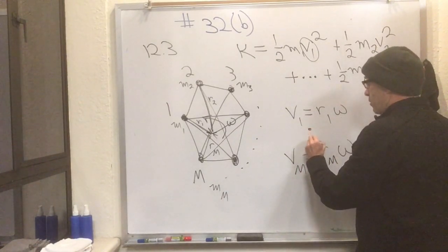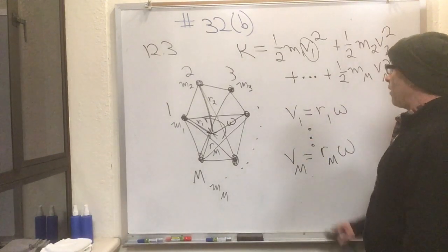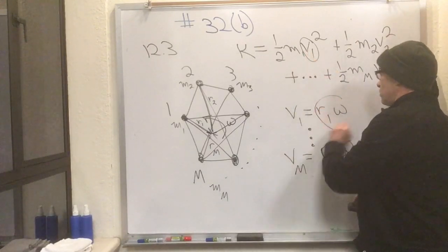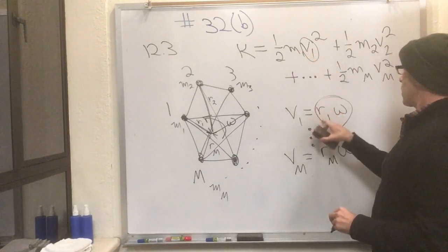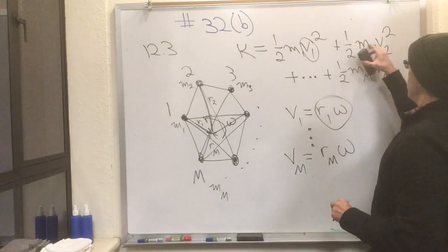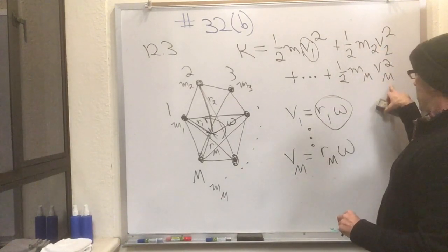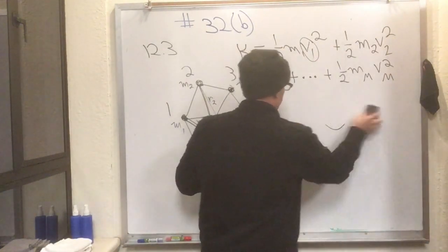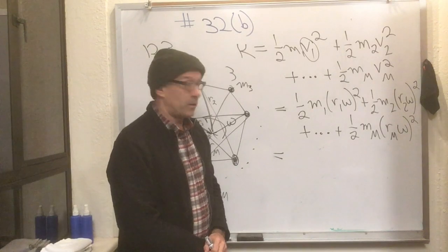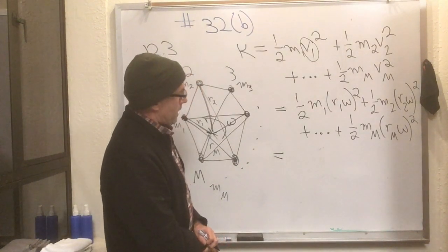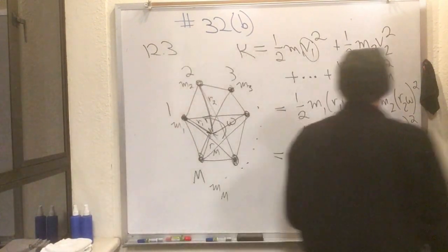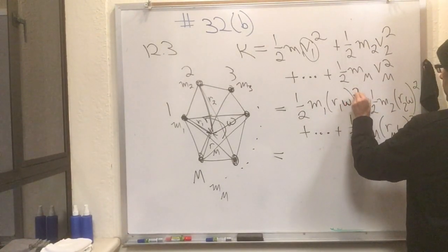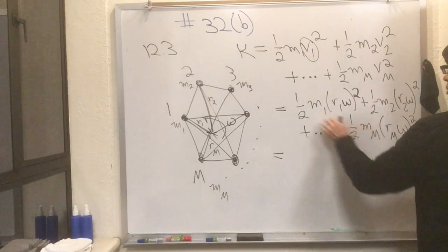So we know all those now, let's substitute. You see where I have v1 up there? Let's substitute what we just learned: that v1 is r1 omega, v2 is r2 omega, vm is rm omega. Let's substitute that. There, I did it. I did the substitution. Now that's looking kind of nasty.